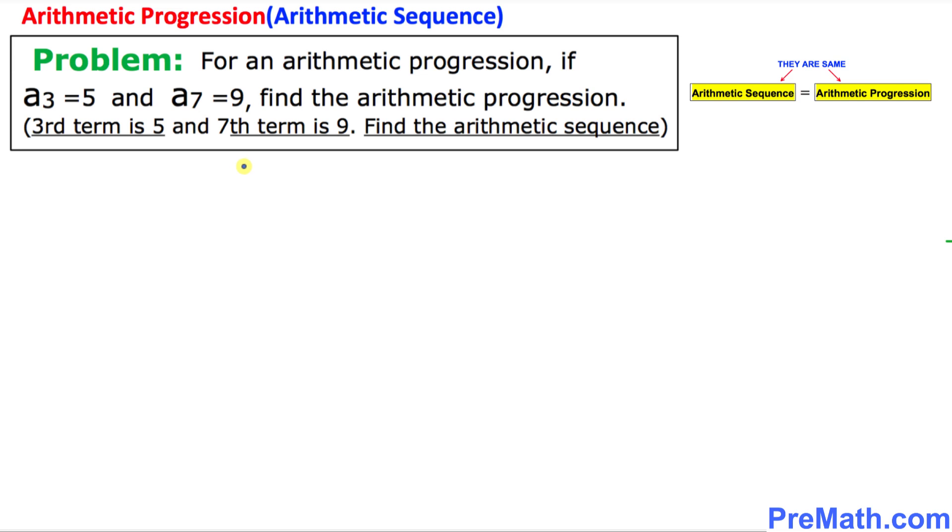And here is our arithmetic progression problem. For an arithmetic progression, if a₃ = 5 and a₇ = 9, find the arithmetic progression. In other words, the third term is 5 and the seventh term is 9—find the arithmetic sequence.